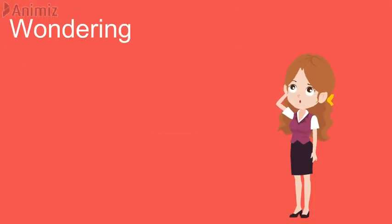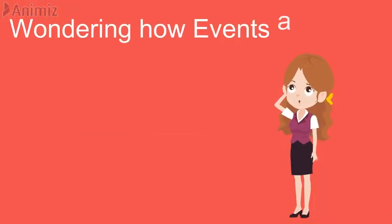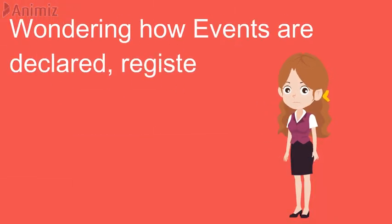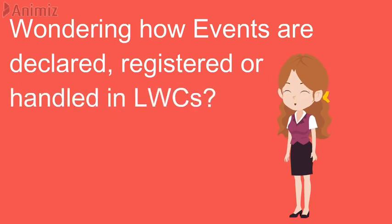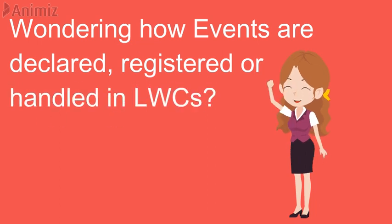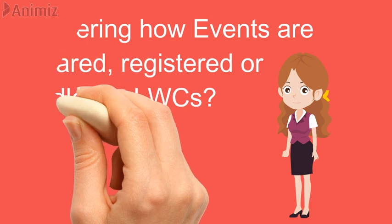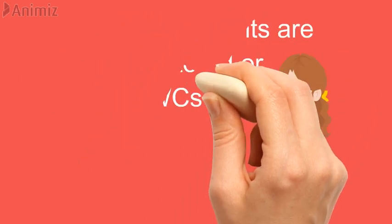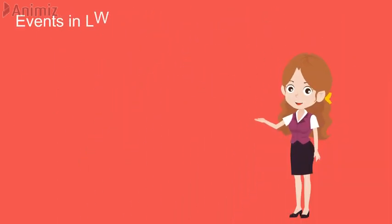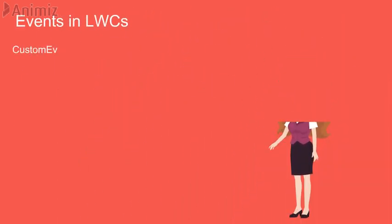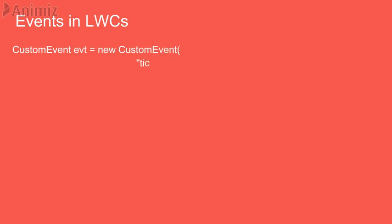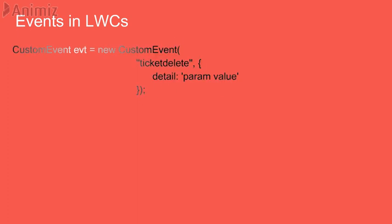Now you must be wondering how events are declared, registered and handled in Lightning Web Components. The answer is surprisingly very simple and a lot easier than Lightning Aura Components. Let's talk about registering or declaring an event. An event is declared using a custom event object in the JavaScript file of your web component.